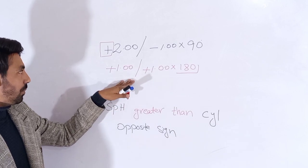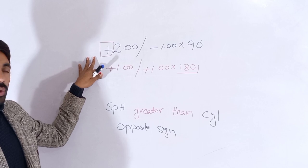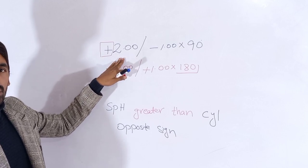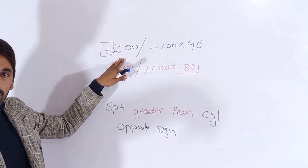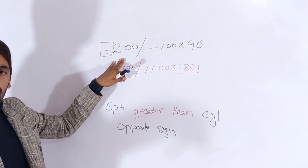And if we had a minus sign with the sphere, then the prescription would be compound myopic astigmatism.